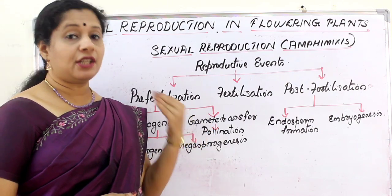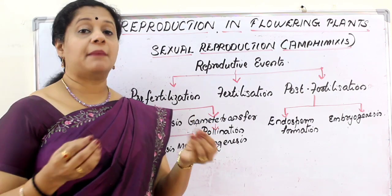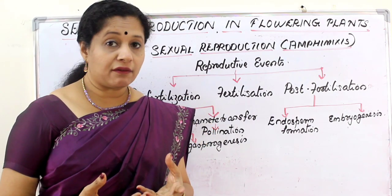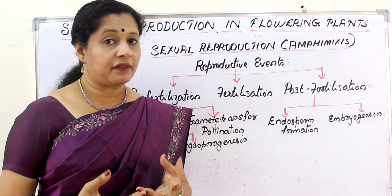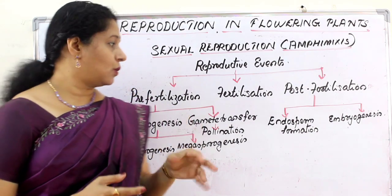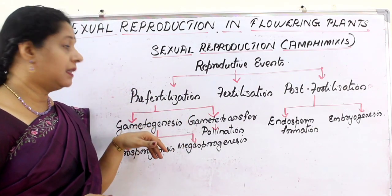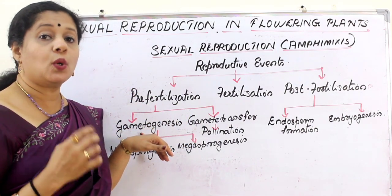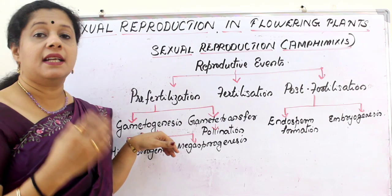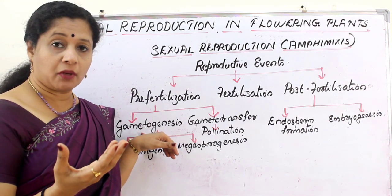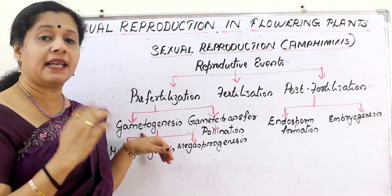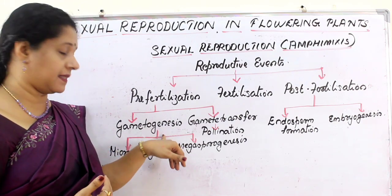Gametes are fusing during this process, so gametes have to form in the body of the parents. That process is called gametogenesis. Genesis means formation, so formation of gametes is called gametogenesis.